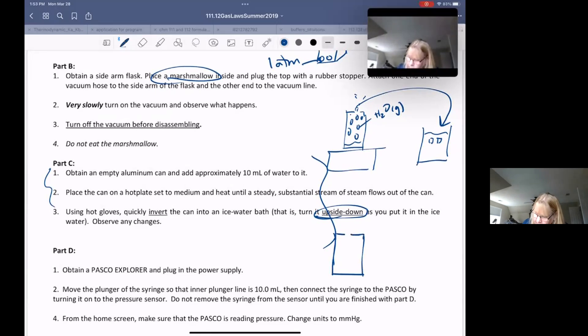What we want when we invert this can into the ice water is all we have in here is water as a gas. When water as a gas gets cold, it is going to go to water as a liquid. And what you're going to make is a little tiny bit of water as a liquid and the rest of this can is empty.